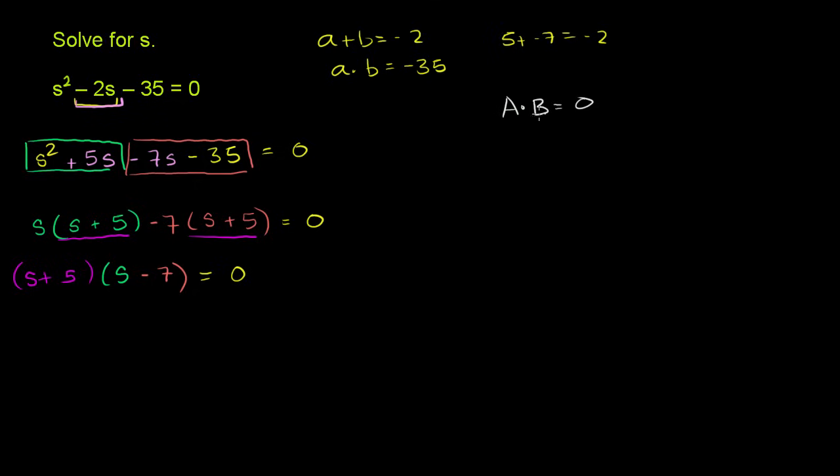what do we know about either a or b or both of them? Well, at least one of them has to be equal to 0. Or both of them have to be equal to 0. So the fact that this number times that number is equal to 0 tells us that either s plus 5 is equal to 0, or, and maybe both of them,